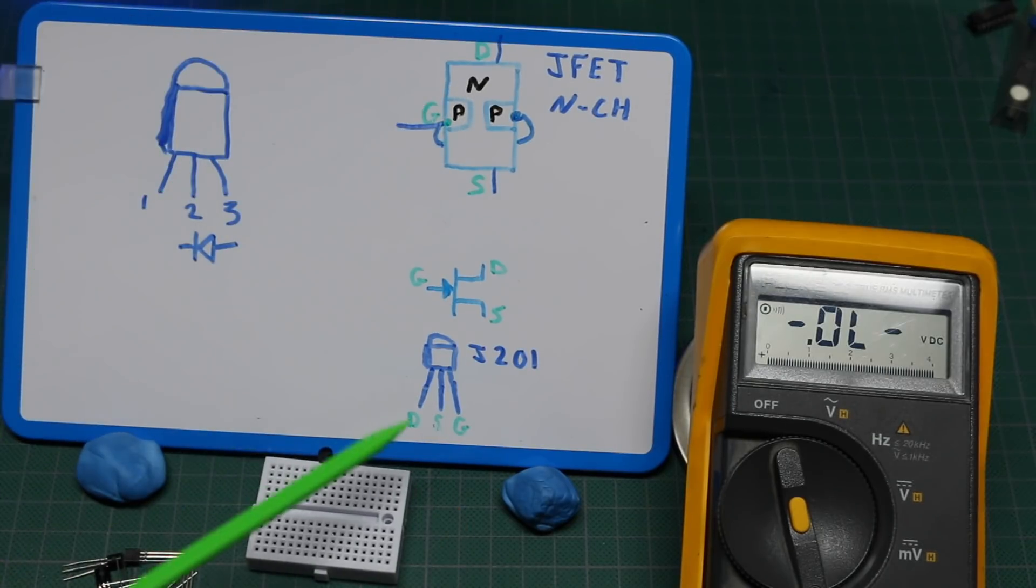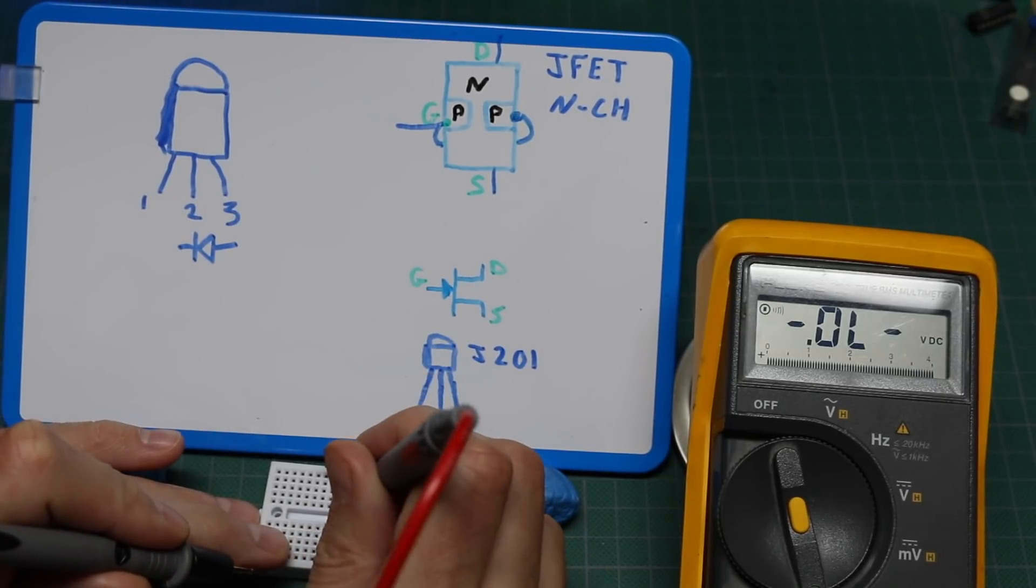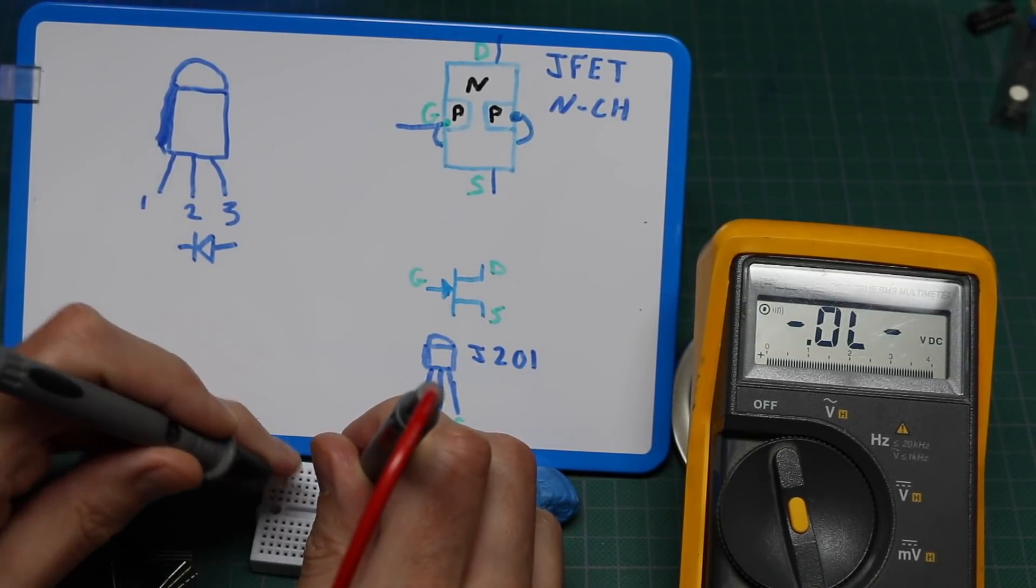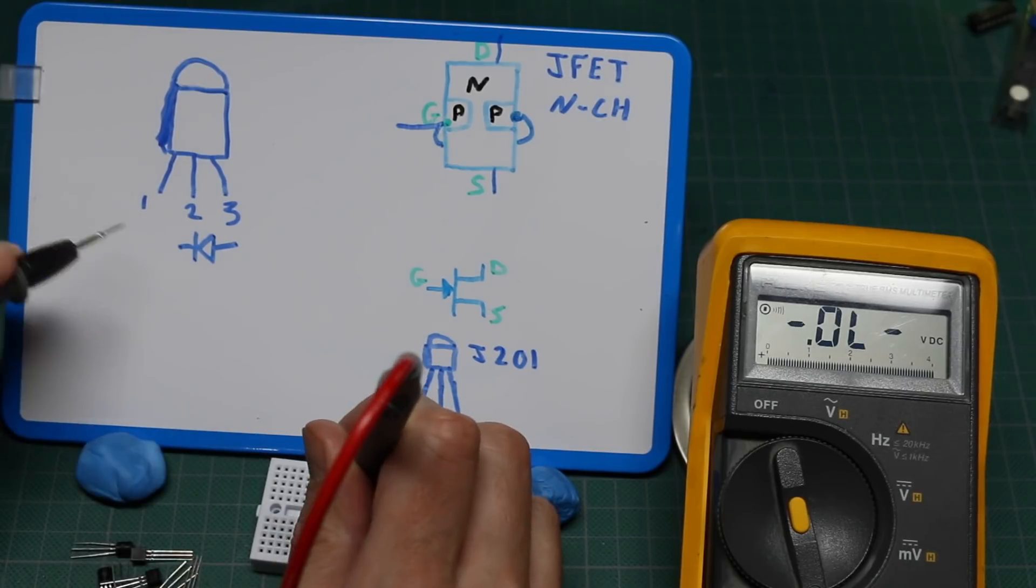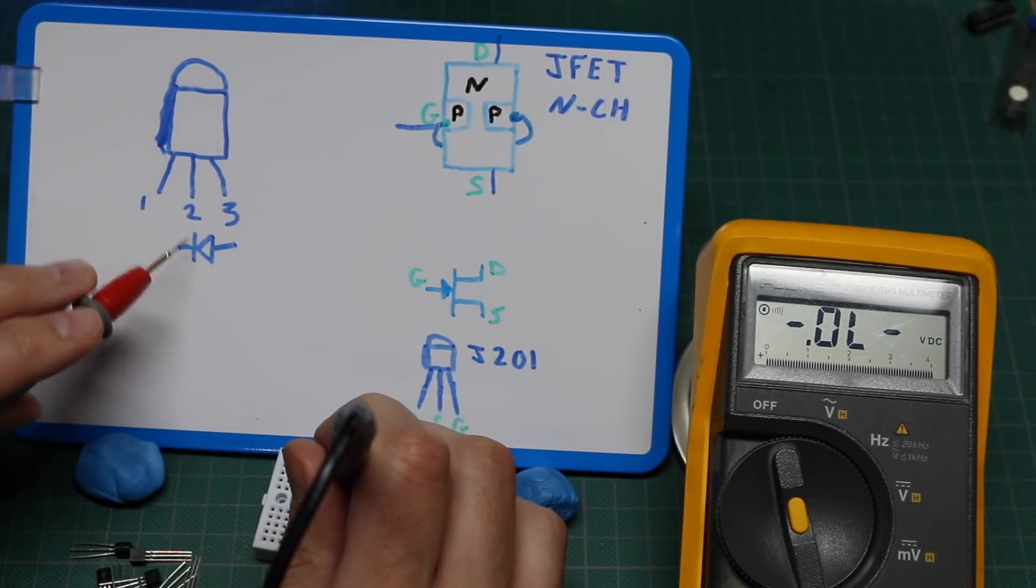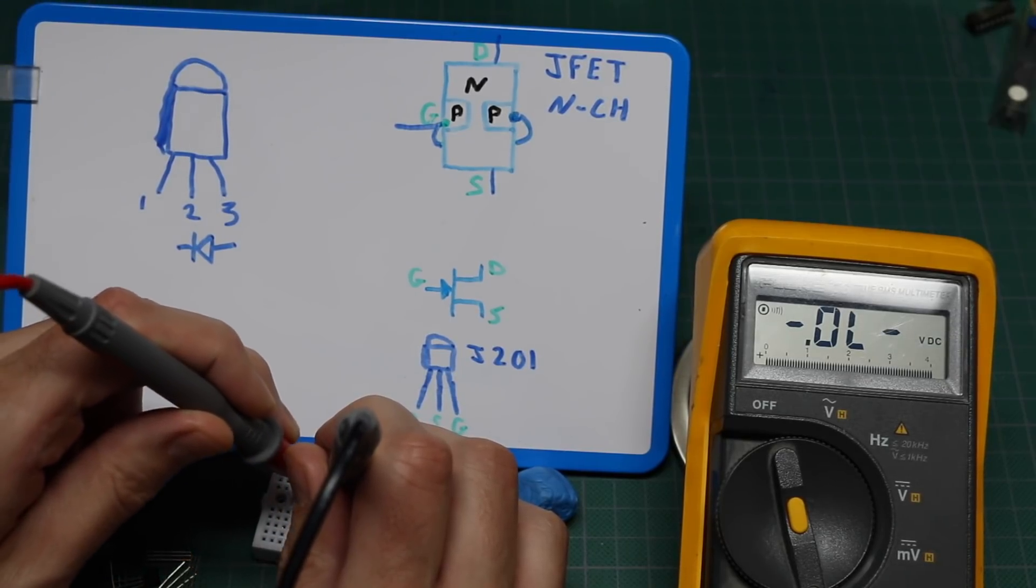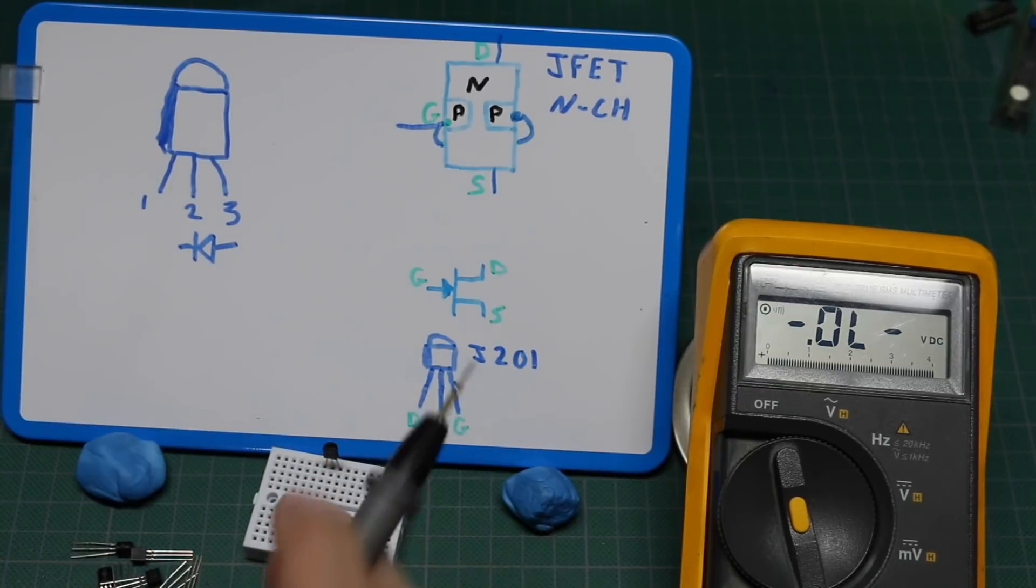So far it looks like between pins two and three I have a diode in this orientation. If I go to pin three with the positive and check pin one, that's an open circuit. Now negative on pin two for a cathode against positive on pin one, we have another diode.